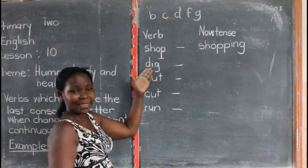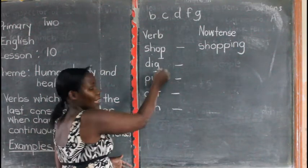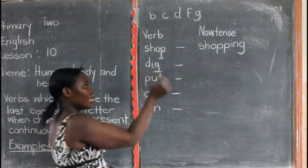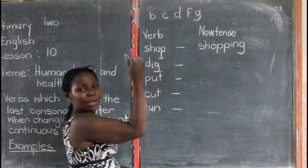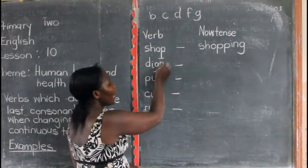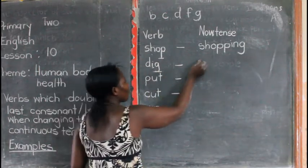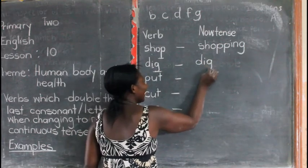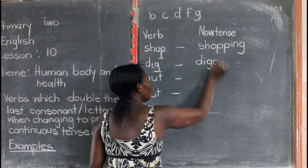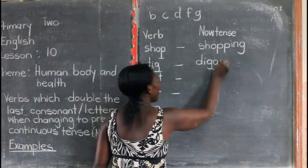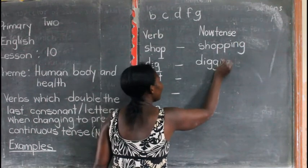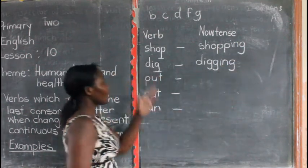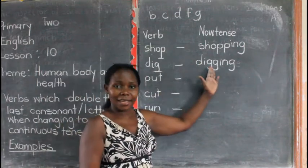Another example: we have 'dig.' The last letter is G, a consonant letter, near one vowel letter. When we are changing it, we make the last letter two — we write two G's and add I-N-G. So 'dig' becomes 'digging.'